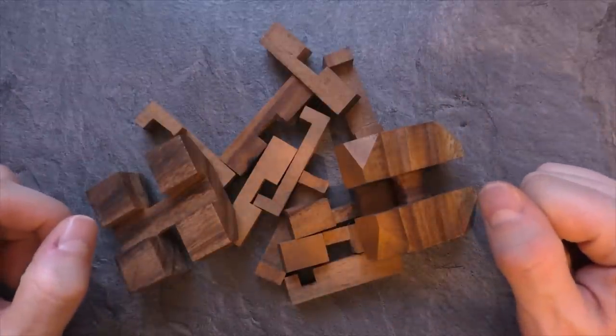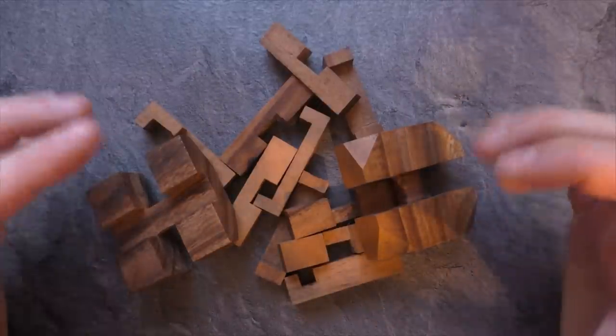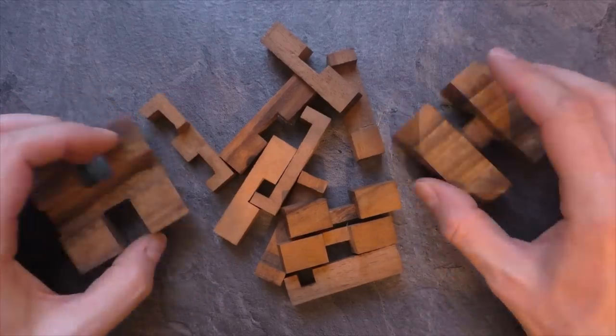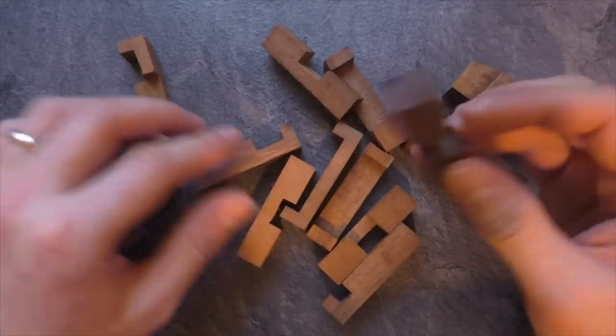So, this is what the puzzle looks like after we disassemble it. Overall, it contains 12 parts, two big parts and 10 of these classic burr parts.